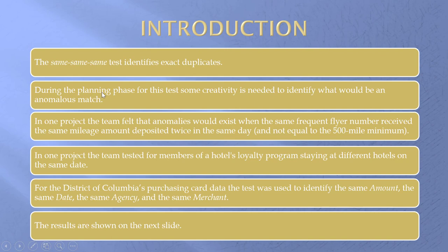During the planning phase, some creativity is needed. If we simply look for all types of duplicates that could exist, we are going to get a huge number of false positives — things that will take up a lot of your time for no good payback. So for the District of Columbia purchasing card data, I'm looking for same amount, same date, same agency, and the same merchant. You would think this is unlikely to occur, except by a rare coincidence.